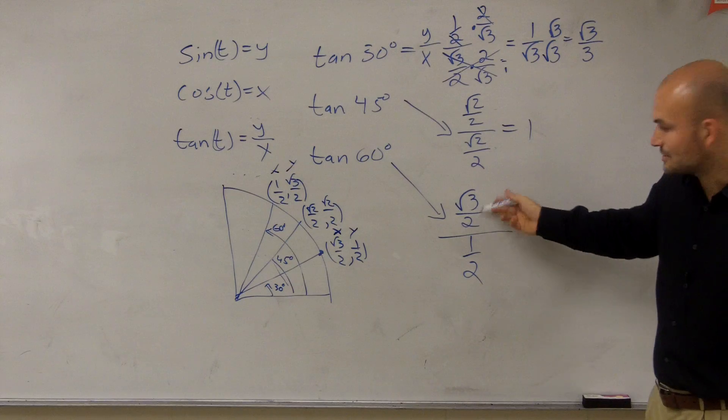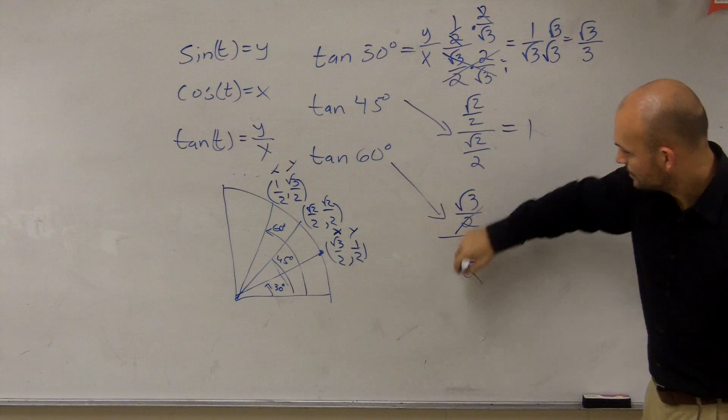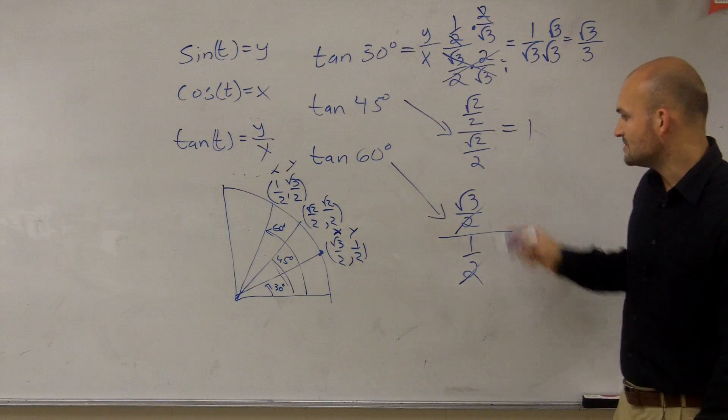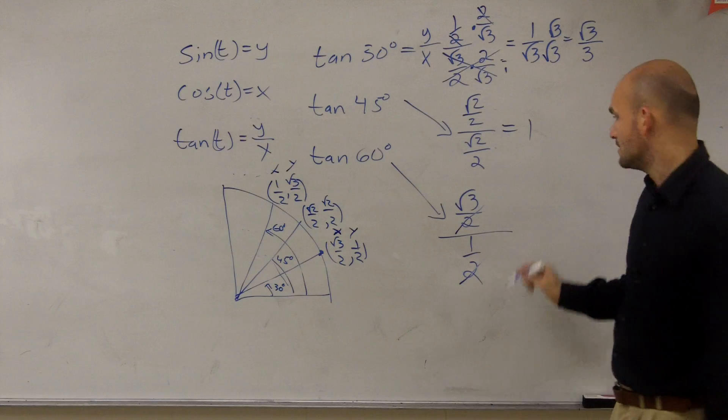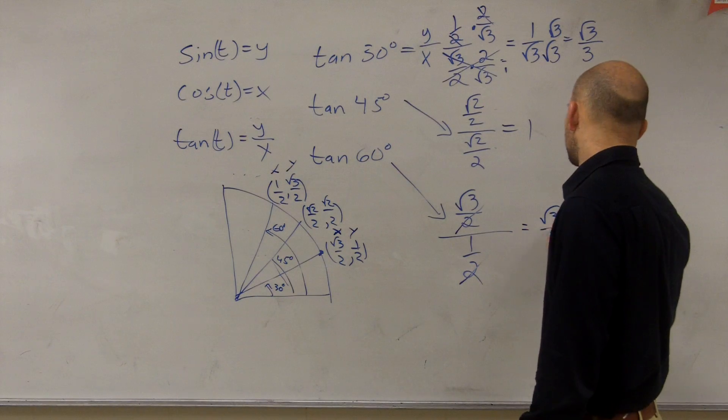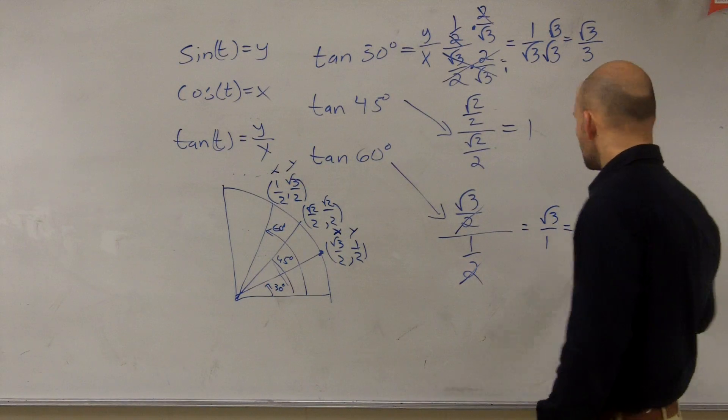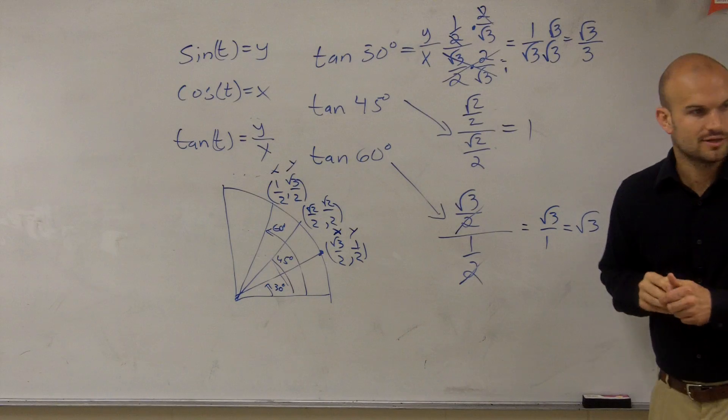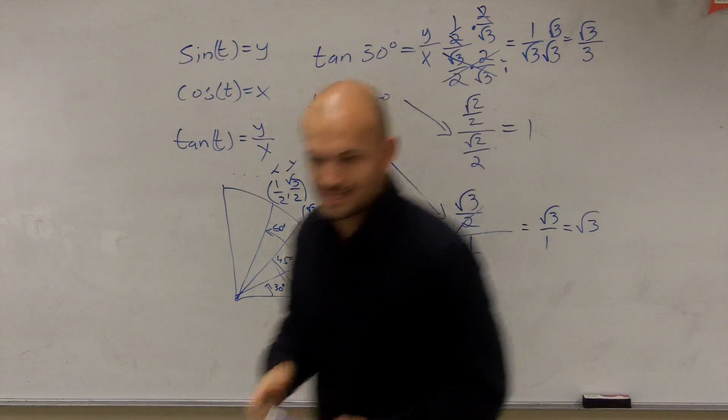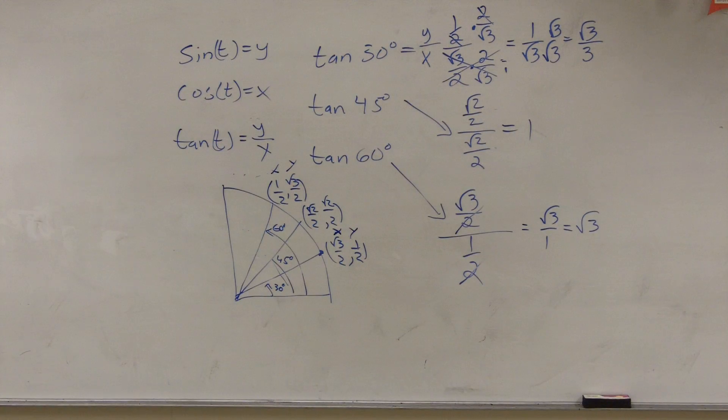So what I can really do is just divide as those divide out. So I'm really just left with the square root of 3 divided by 1, which is just equal to the square root of 3. So there you go, ladies and gentlemen. That's how you work with your tangent. Thank you.